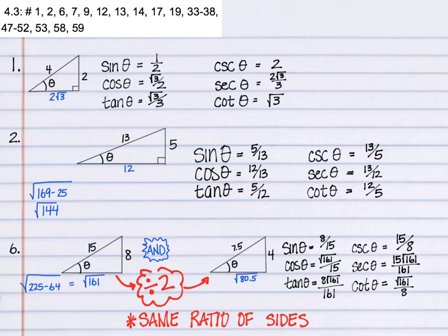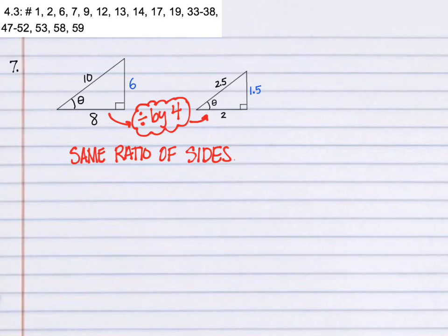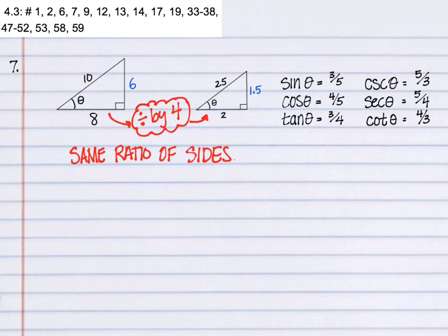So they're going to have the same trigonometric ratios. And this one is just one-fourth of the previous triangle. So once again, they're going to have the same ratio of sides, which is what trig is all about, the ratio of sides.